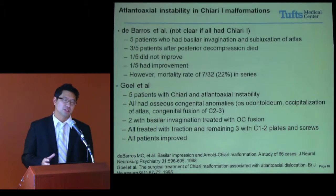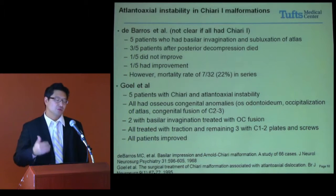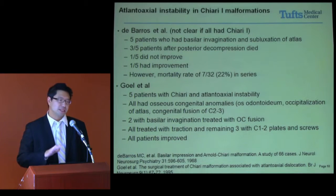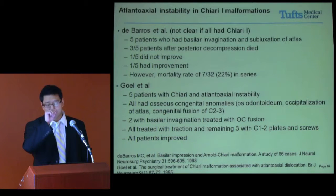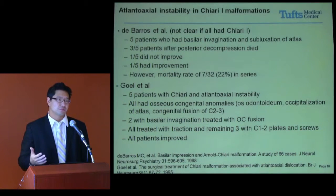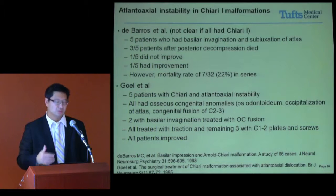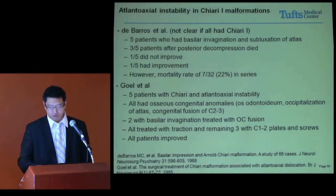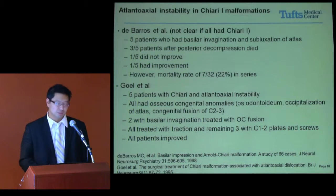Turning specifically to Chiari and atlantoaxial instability, some of the early studies include a paper by Dr. DeBaras involving five patients, from the 1960s and 70s. In a series of 68 patients, they identified five with basal invagination and atlantoaxial instability. Not all were clearly Chiari-1 patients. After posterior decompression, five of them died. Only one had some improvement. The mortality rate in their series was over 20%, which they reported as comparable to other published data of that era — certainly much higher than what we accept today.